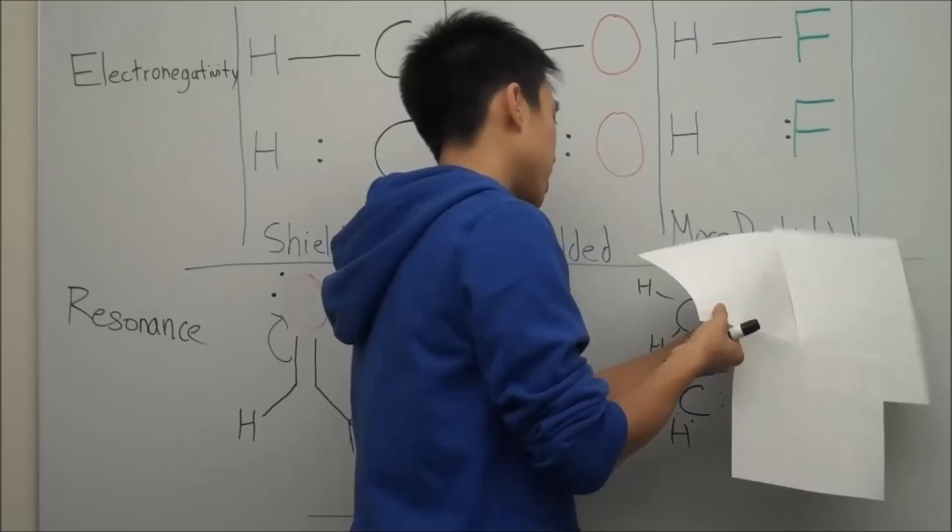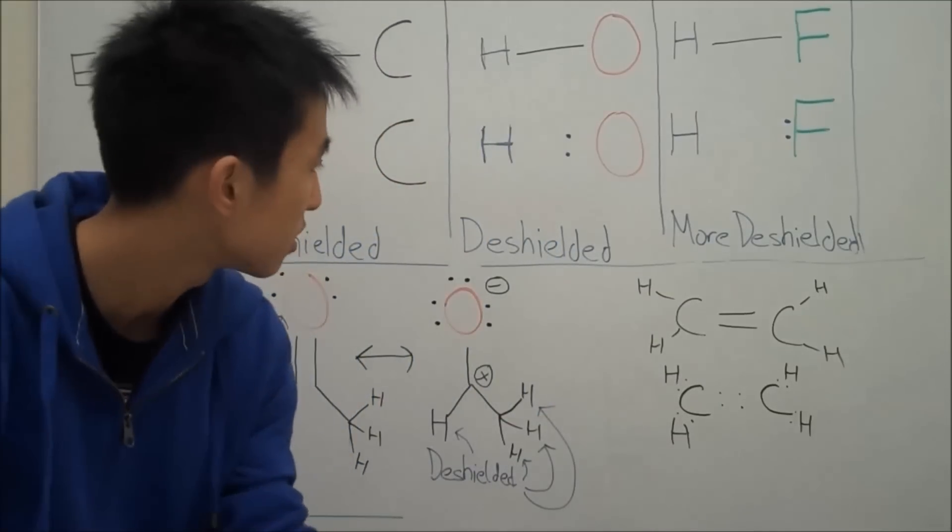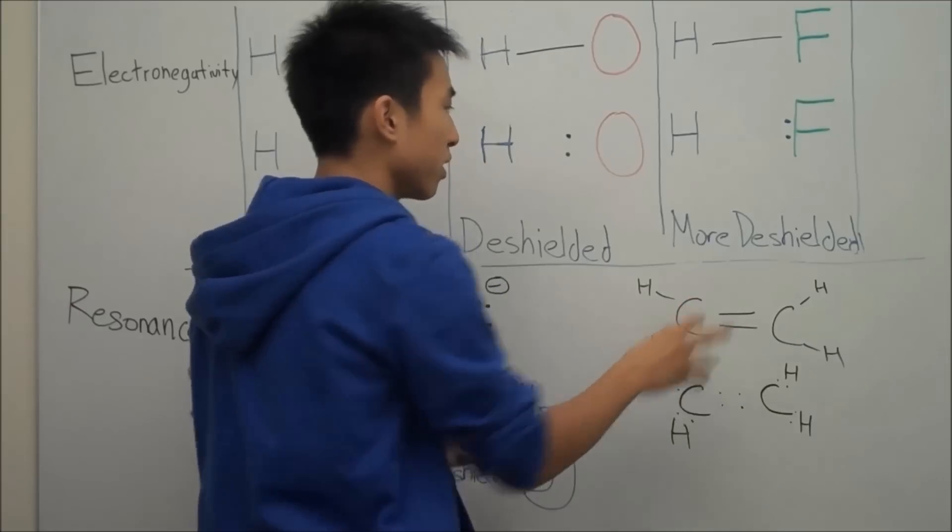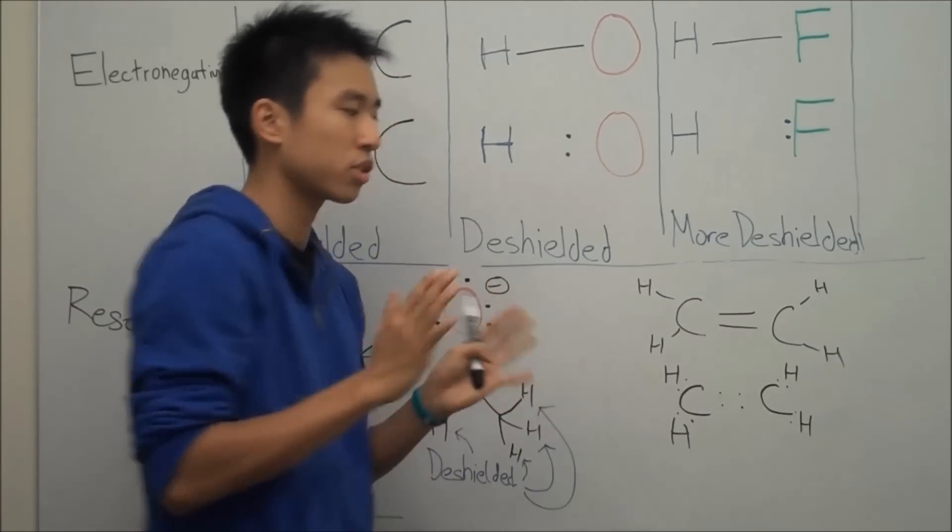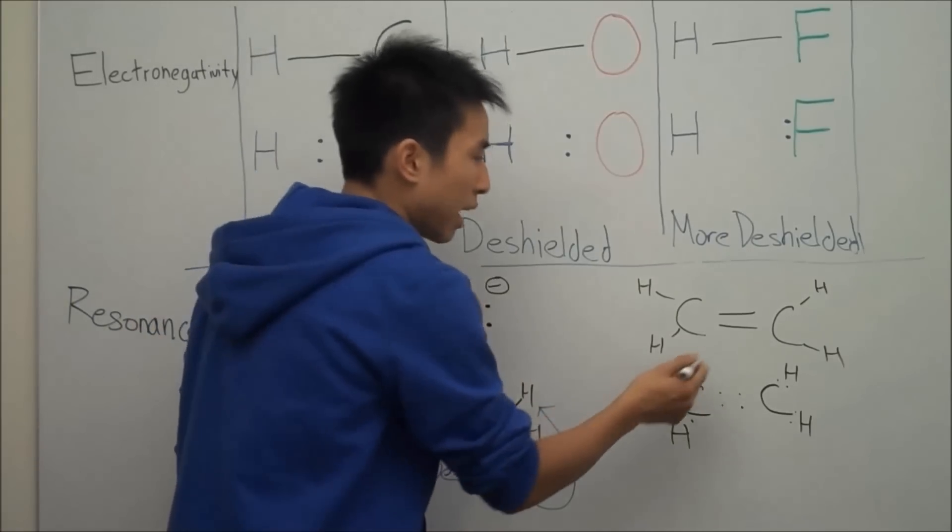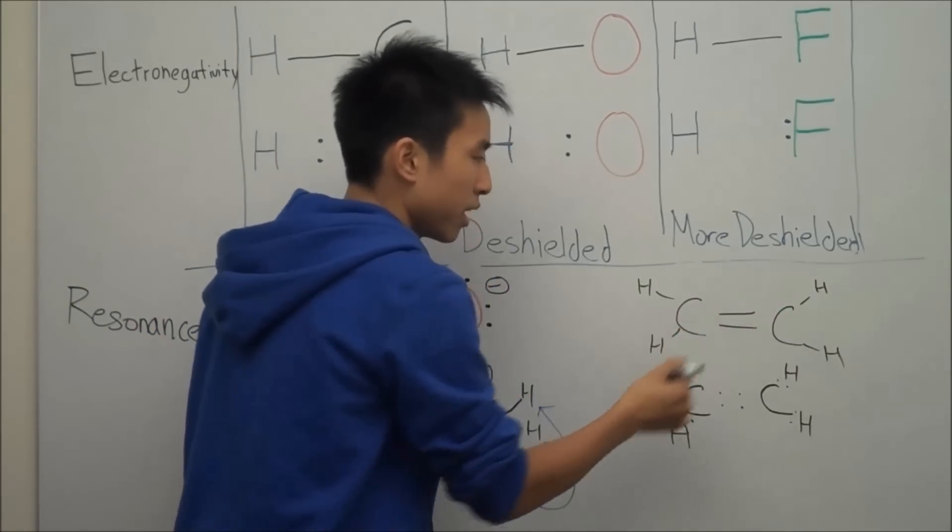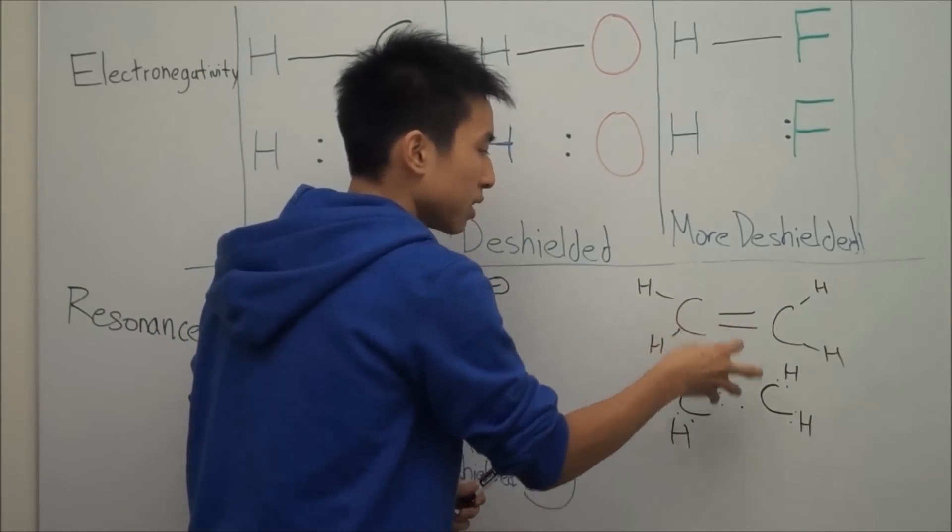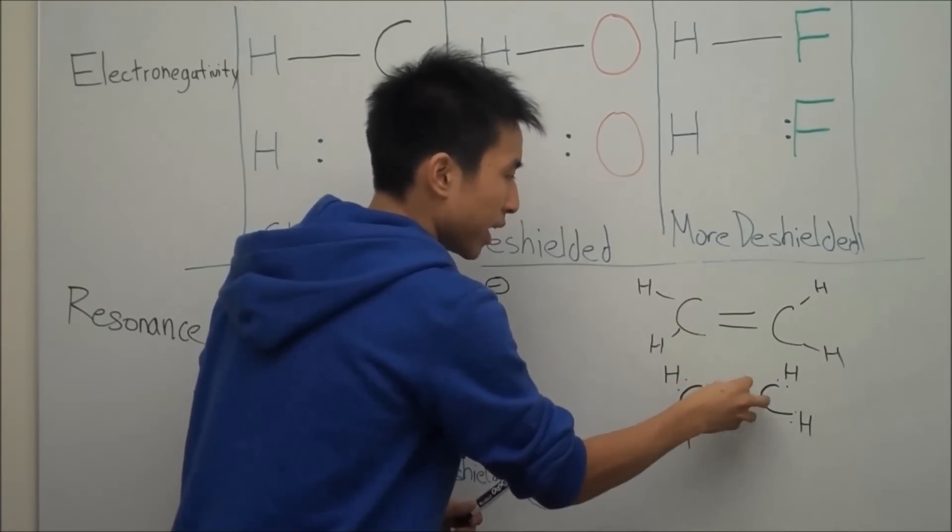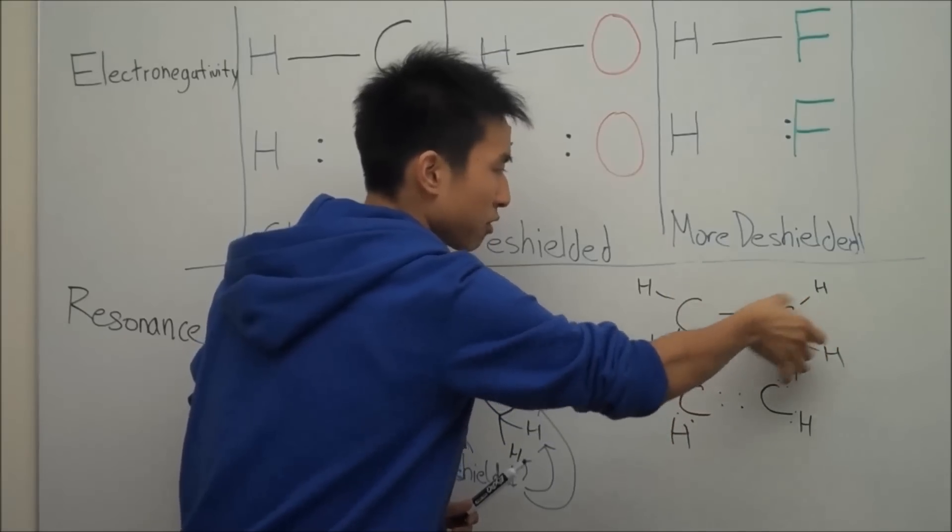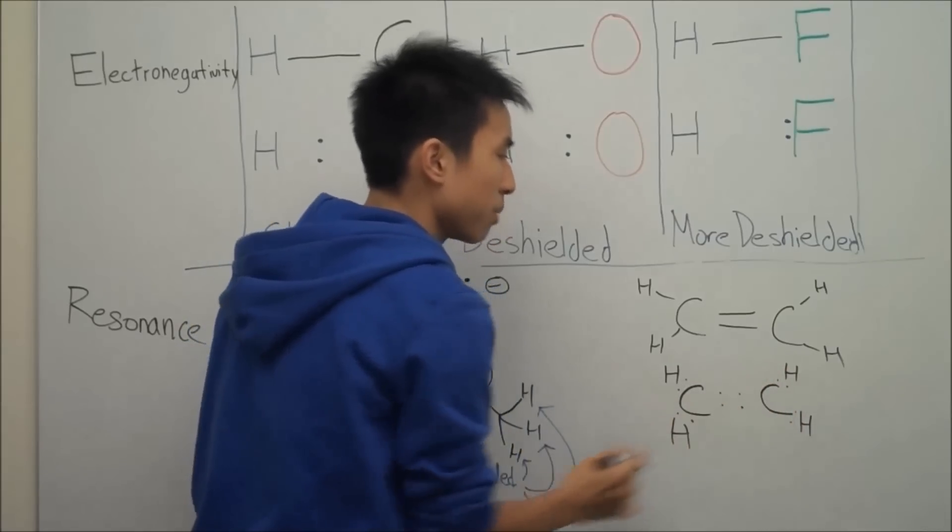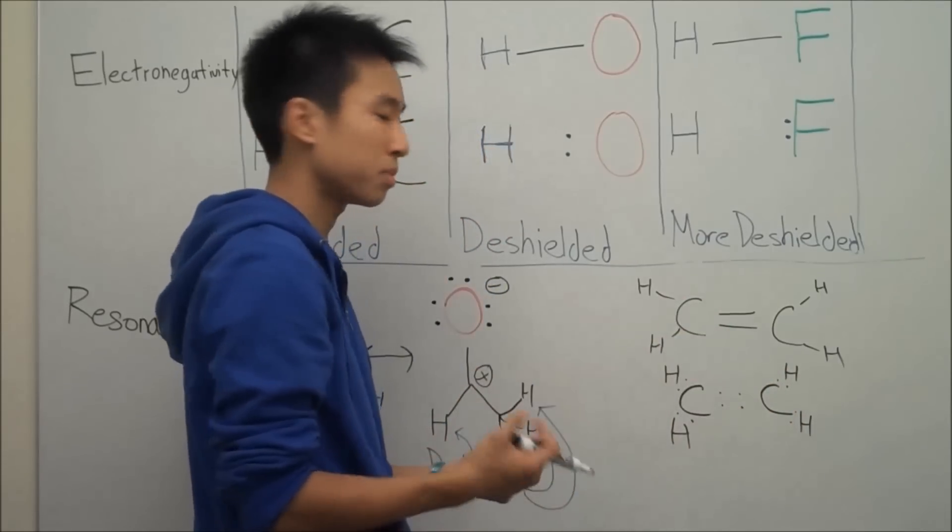The next thing I want to go over is alkenes. So alkenes are actually electron withdrawing, also known as, when you hear electron withdrawing, just think of like a deshielding group, more or less. So alkenes are just basically a carbon carbon double bond. And because the electrons are so concentrated and centered right here, it kind of just pulls the electrons away from the hydrogens at the ends. And that's why these hydrogens will also be deshielded by an alkenes functional group.